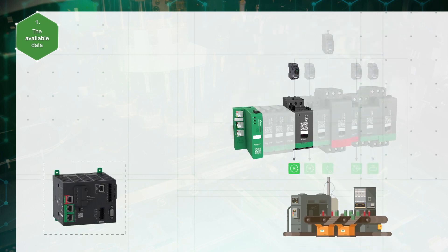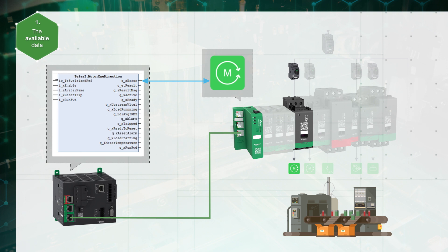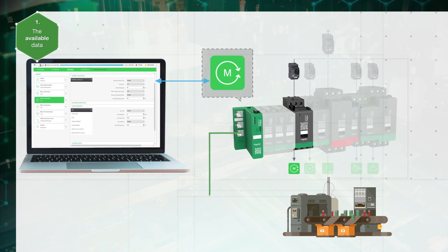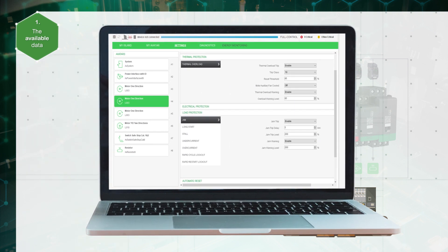Live operation data are available through the function blocks on the PLC, through engineering tools such as EcoStruxure Machine Expert and SoMove, and through the integrated operation and maintenance tool as web server or software — part of the EcoStruxure apps and analytics architecture.